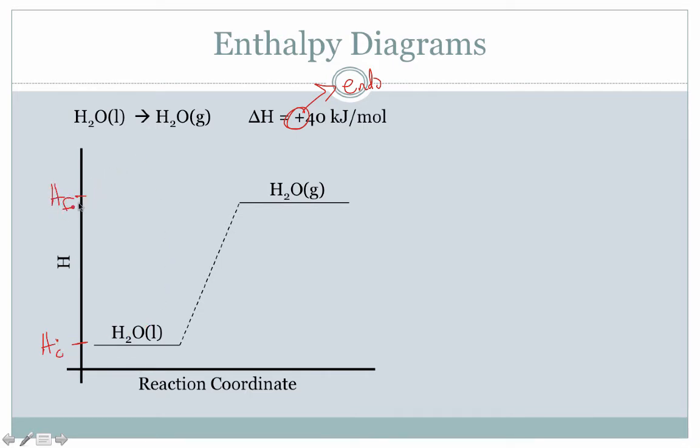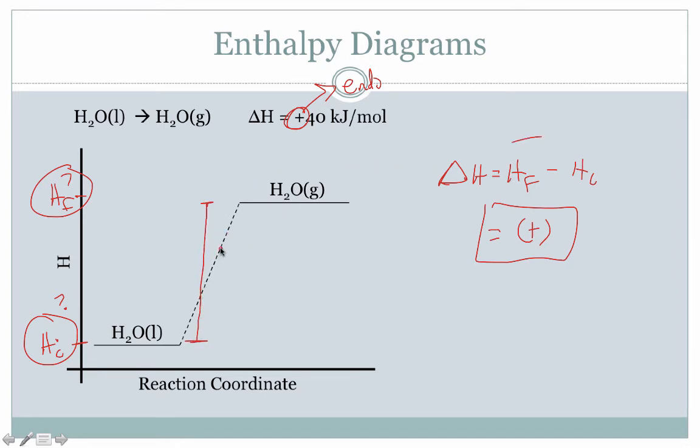Our final enthalpy, H sub F, is a higher value. And again, our change in enthalpy, delta H, is equal to the final minus the initial. And as a result of that, a larger number minus a smaller number gets us a positive value as an answer. And we don't know what these values are, but we do know that the difference in these two levels is the difference between the two values, which is equal to our value of delta H.